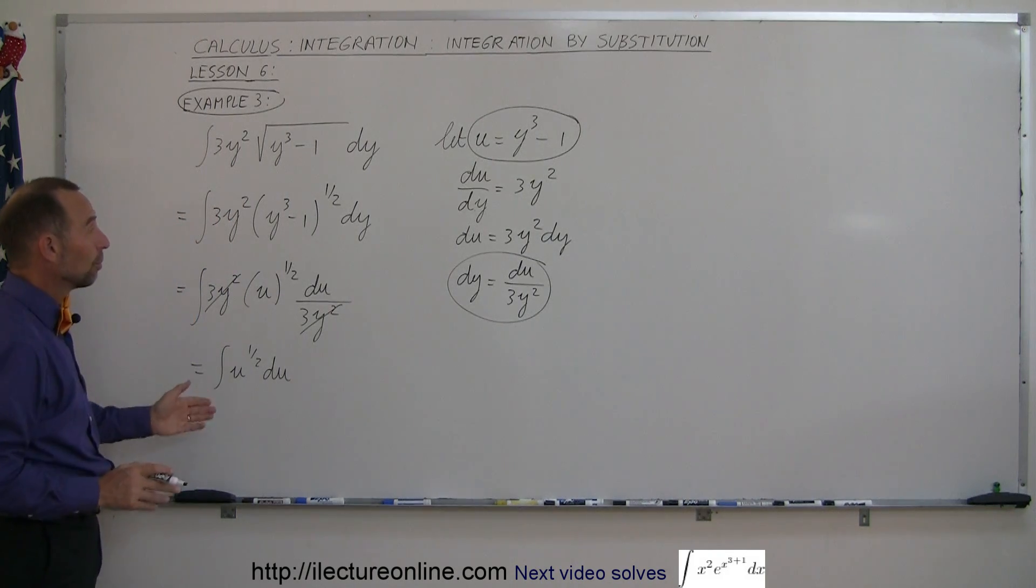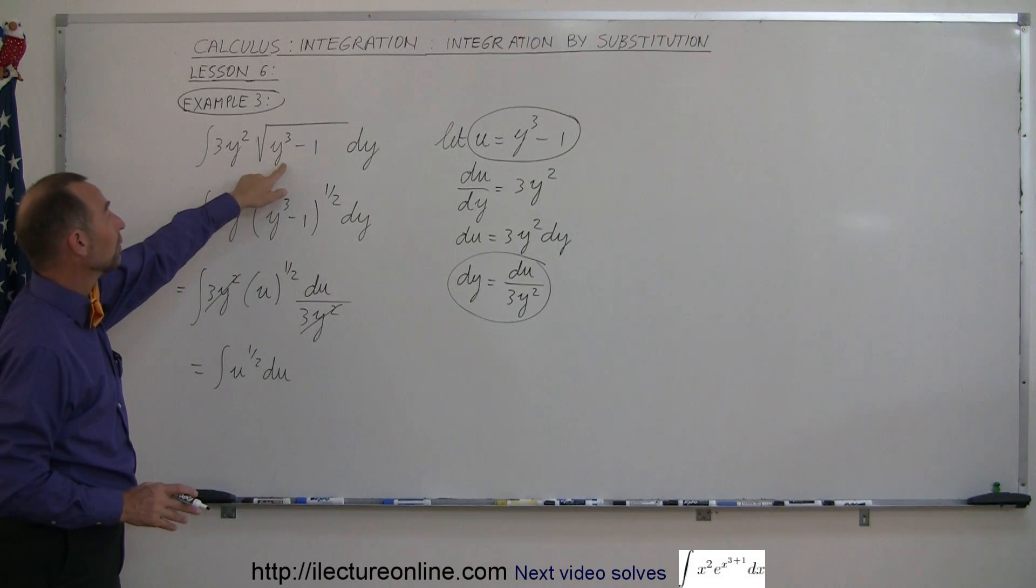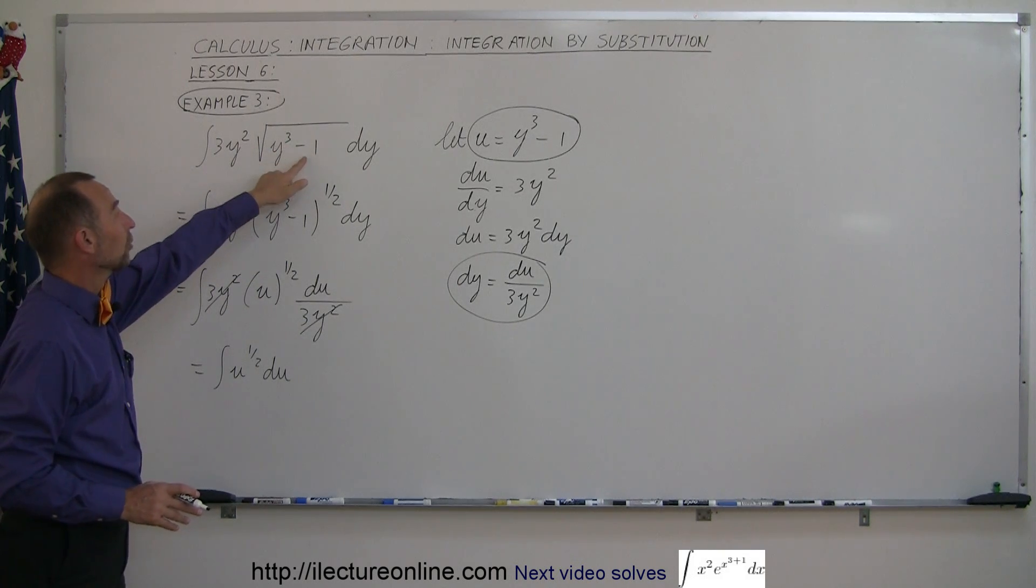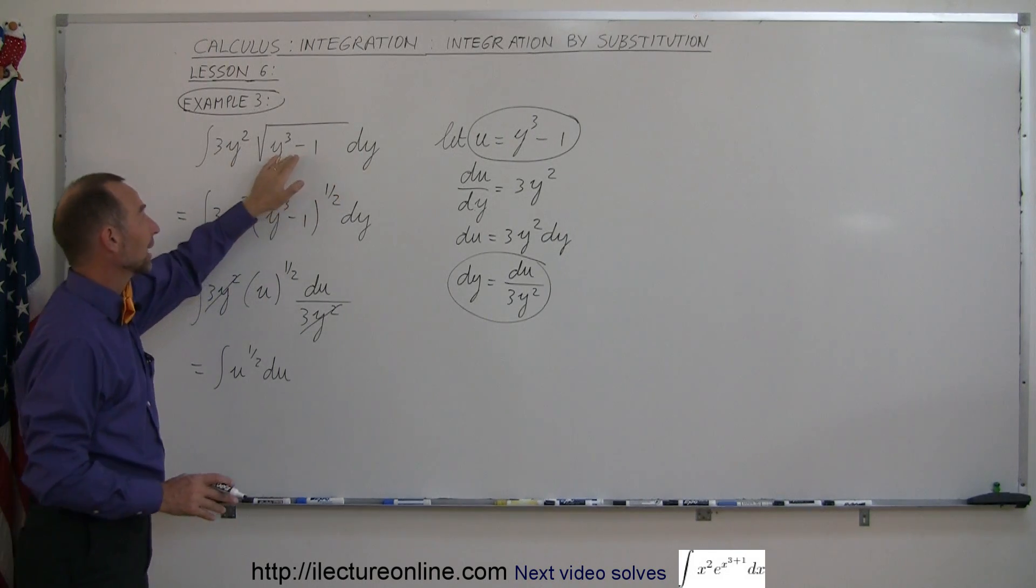So sometimes without going through these steps here, you can look at this and go, ah, the derivative of y cubed minus 1 is 3y squared and then the differential is dy. So since I have a 3y squared dy, I can simply integrate what's there.